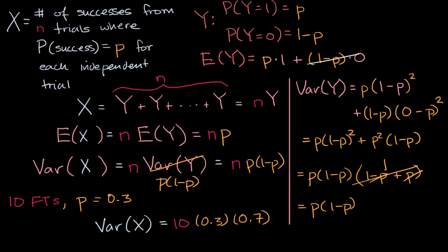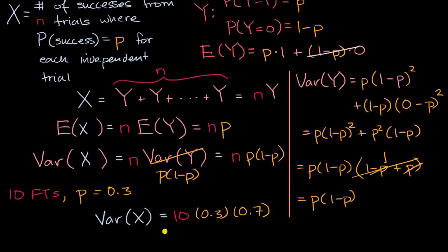So that would be 10 times 0.3 times 0.7, which equals 0.21 times 10, so my variance in this situation is equal to 2.1. And if I wanted to figure out the standard deviation, I would just take the square root of this expression.